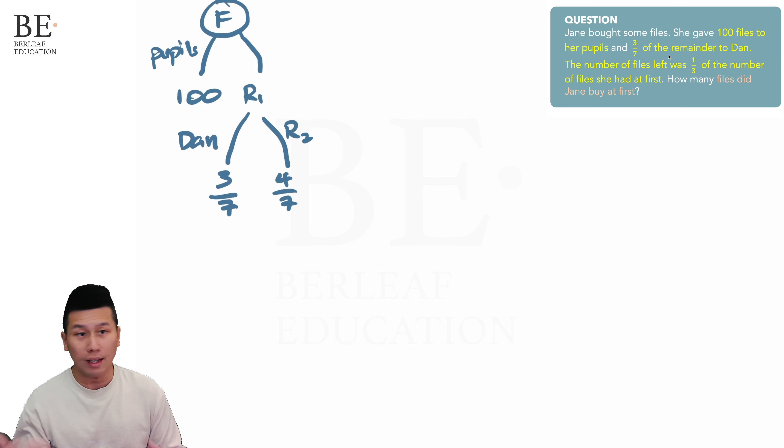Last piece of information: we were told that one-third of the number of files, which is represented by a capital F as we can see here, is actually the remainder. So now from here what we can see is that R sub 1 is actually one of the essential information that we need to have, which is a fraction.